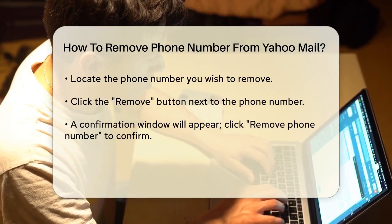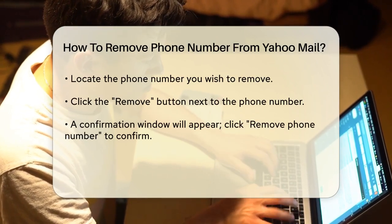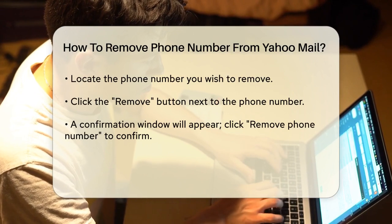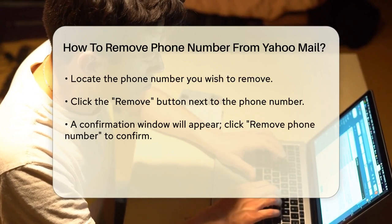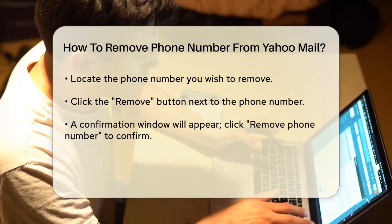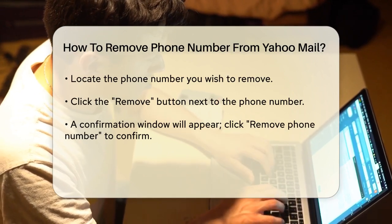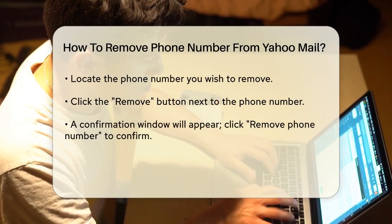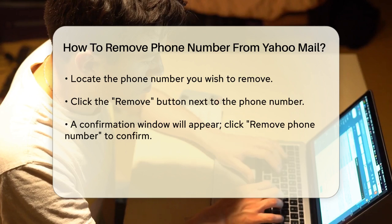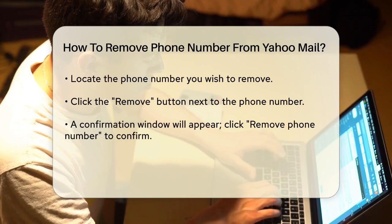From the Account Settings page, navigate to the Account Security section. Here you'll find various security options, including the phone number associated with your account.